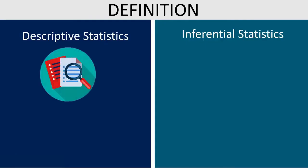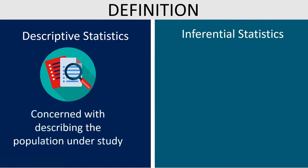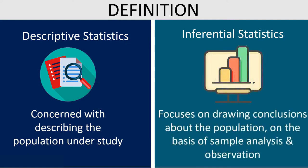Definition: Descriptive statistics is that branch of statistics which is concerned with describing the population under study. On the other hand, inferential statistics is a type of statistics that focuses on drawing conclusions about the population on the basis of sample analysis and observation.